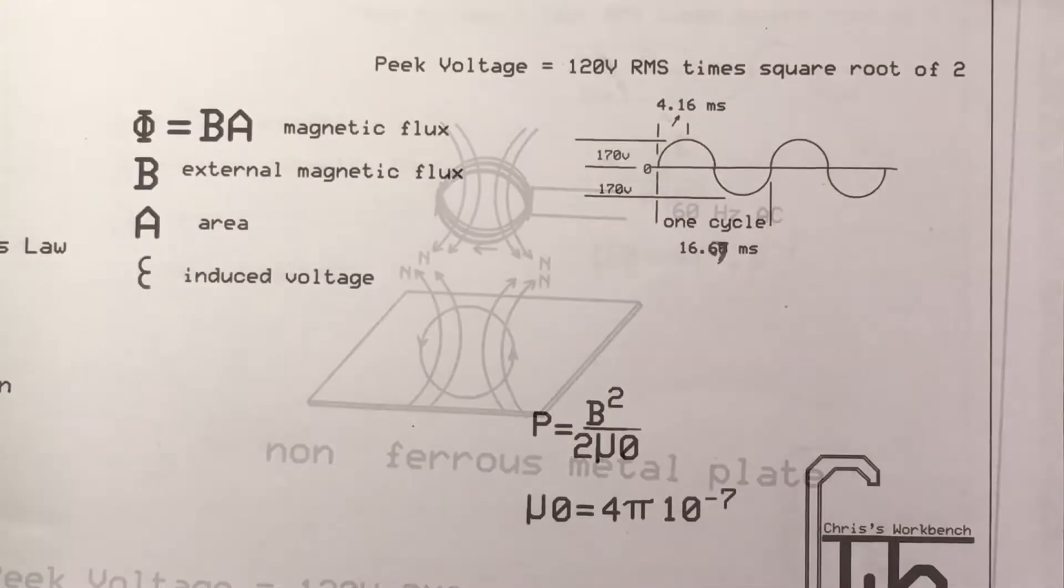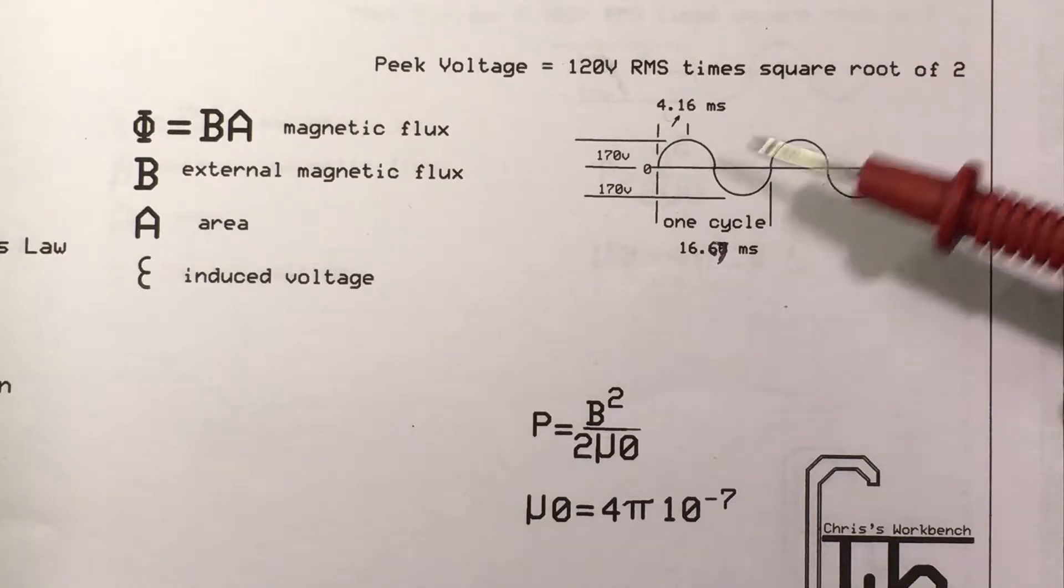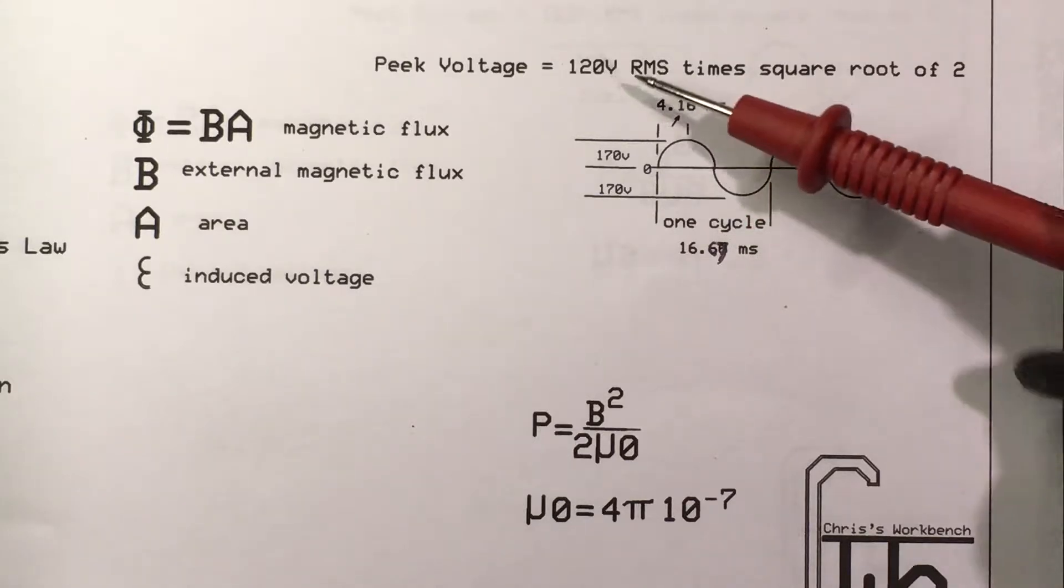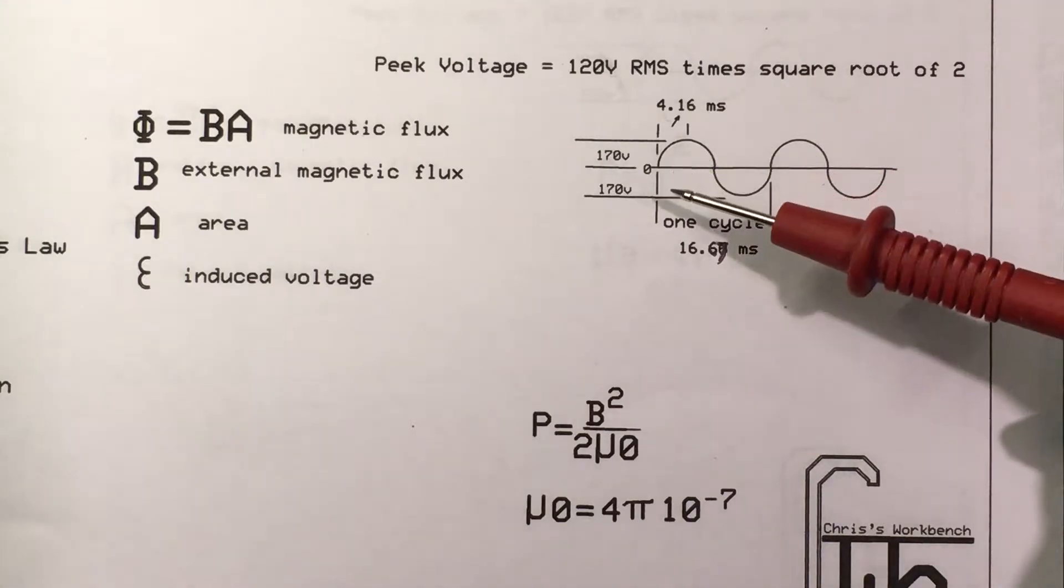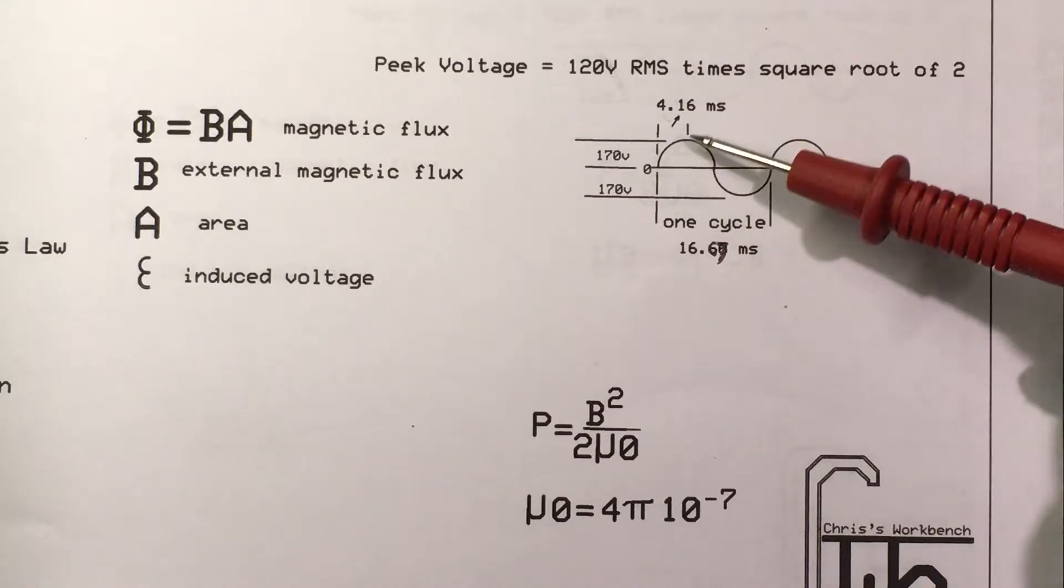I'm going to put 120 volts AC, 60 Hertz into this coil. The peak value of 120V is going to be 170—you take the RMS value times the square root of 2, 1.414, to get your peak value. It's about 170 volts. It's going to start at zero and rise up to 170 in about four milliseconds.